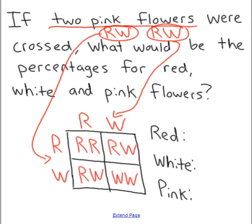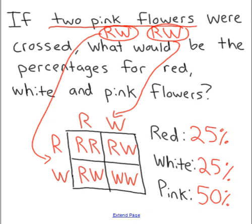Bringing the letters down and across in the Punnett square — you may need to go back a slide to check the genotypes — RR equals red, RW equals pink, and WW equals white. When we count the boxes, the answers are 25% red, 25% white, and 50% pink. This has been A Bit of Biology with Mr. Rock, signing off.